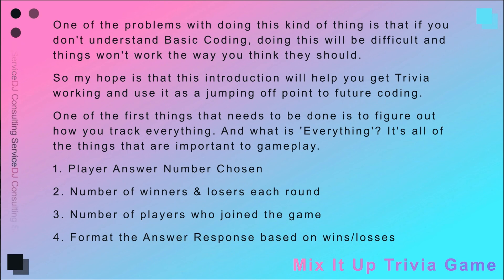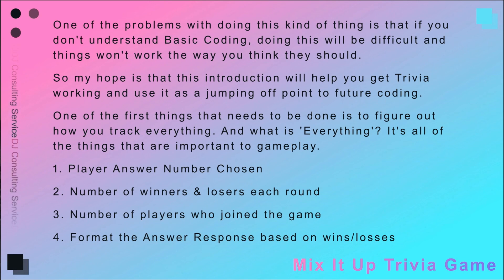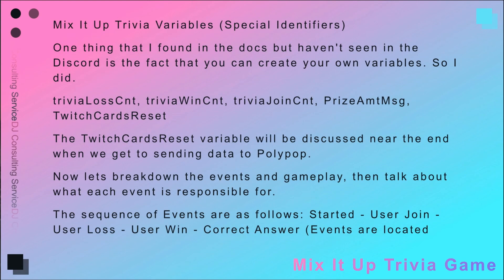The things important to gameplay are: the player's answer number chosen — when the question and four answers are shown and players pick a number from one to four, you have to track that for every player. You also have to count the number of winners and losers. The software helps by running through the win/lose cycle with a variable that counts. And number three: the number of players who join the game — there's an event that when each player joins it says 'welcome, username' to the game, and it counts how many people are joining.